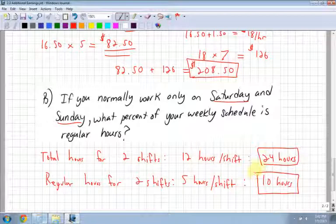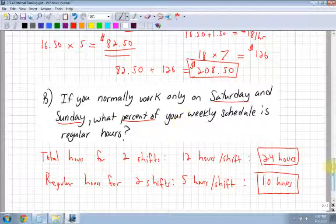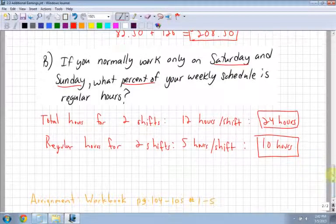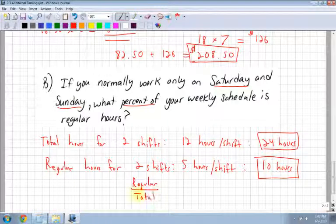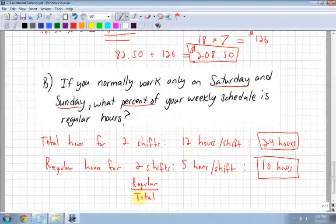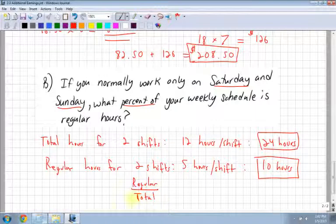Whenever you want to find percents of anything, you always want to divide by the total amount. I remember that to this day and it helps me a lot. You always want to divide by the total amount. You have 10 out of 24. Another hint: when you divide them, you always want to get a decimal answer and then convert that to a percent.